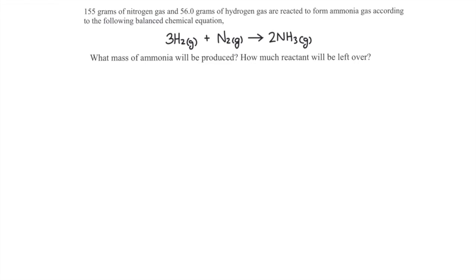This problem involves a limiting reactant because the quantities of two reactants are given. There are two ways to solve a limiting reactant problem like this. We could first compare the two reactants to each other, determine which one runs out first, and then use that to figure out the amount of product that could be made.